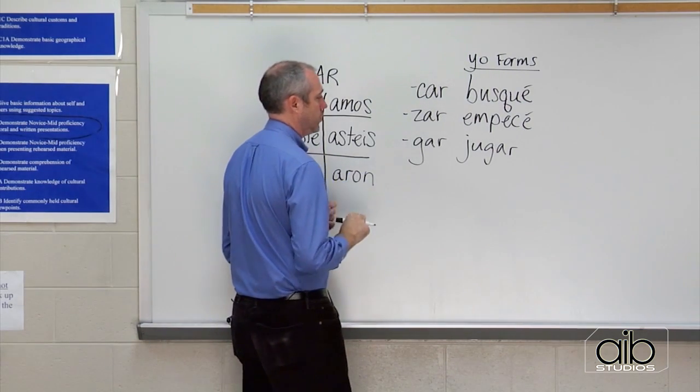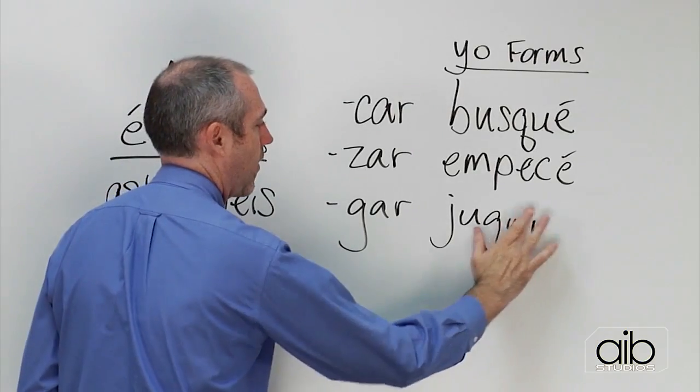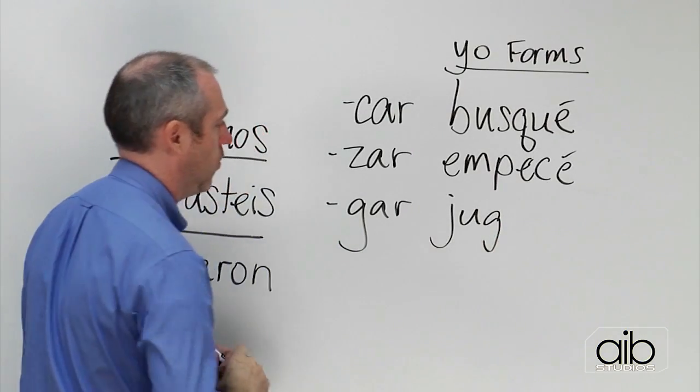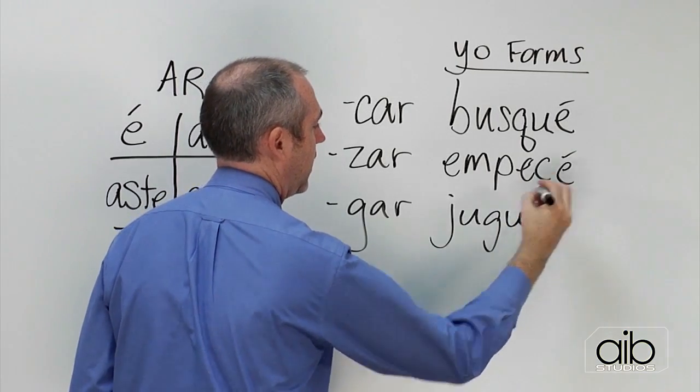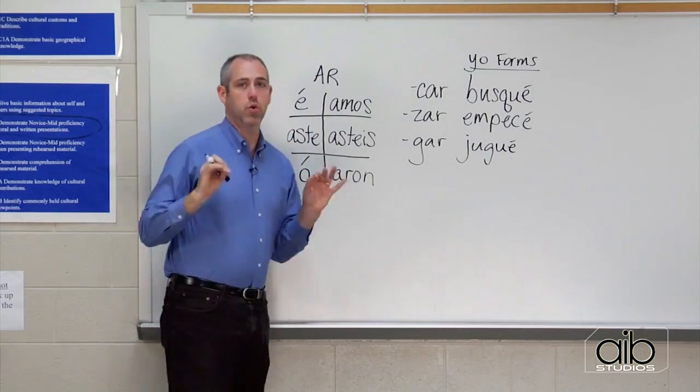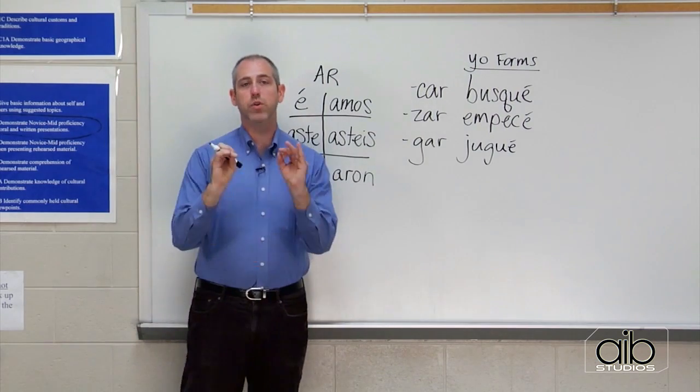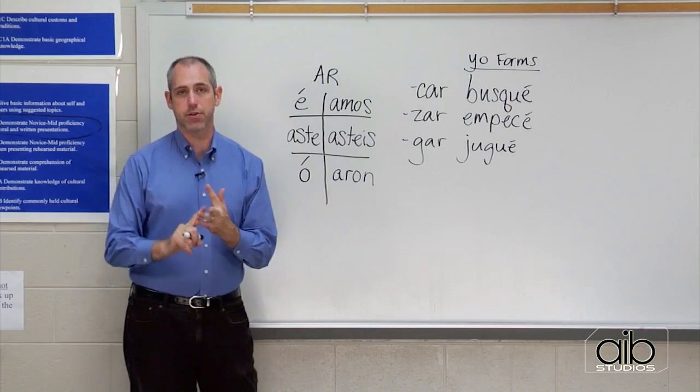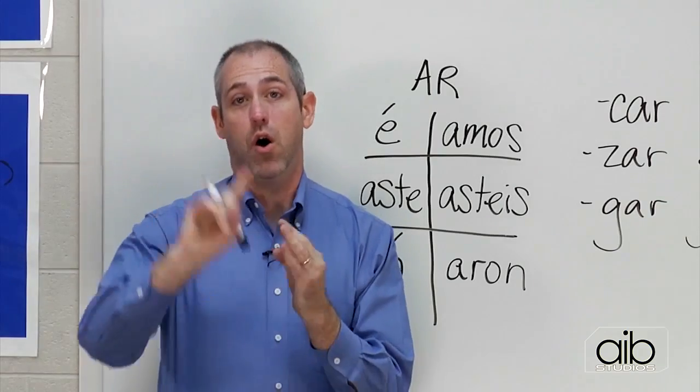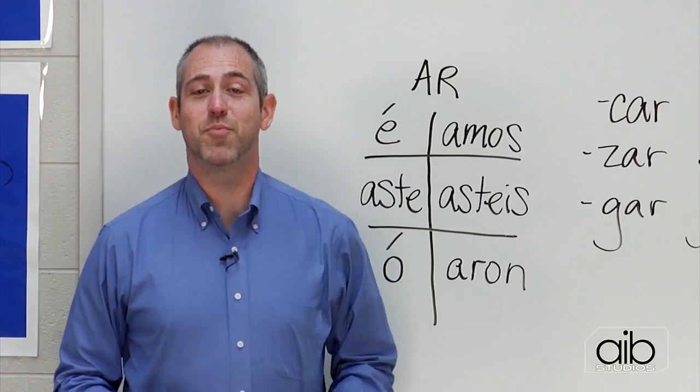Now, for G-A-R verbs, we'll have to take off the A-R. And we will simply put a U and then an é. Yo jugué. I played. And so that's the only little modification that we have to remember. C-A-Rs, Z-A-Rs, and G-A-Rs. Only in yo forms. Only in the preterite.